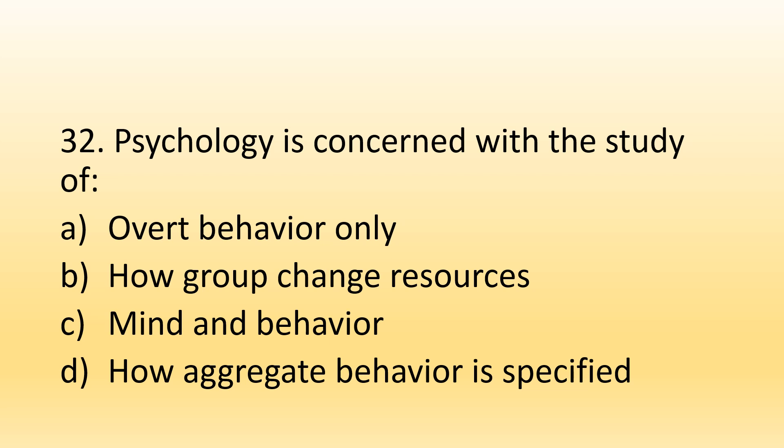Number 32. Psychology is concerned with: Option A, Overt behavior only; Option B, How group changes resources; Option C, Mind and behavior; Option D, How aggregate behavior is specified. The right option is Option C, Mind and behavior. We all know that psychology is concerned with the study of mind and the study of behavior.